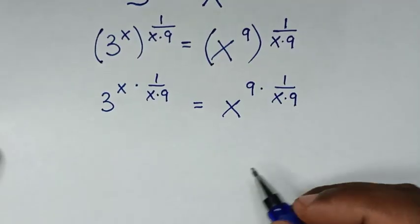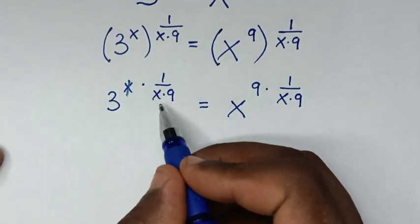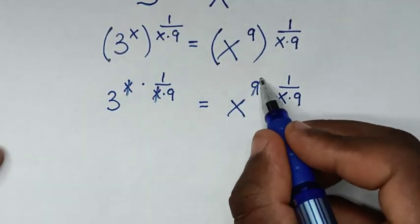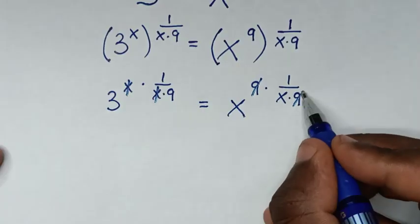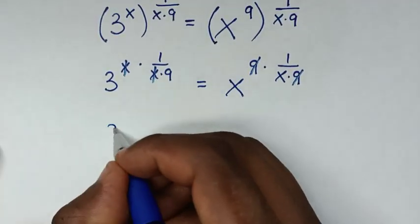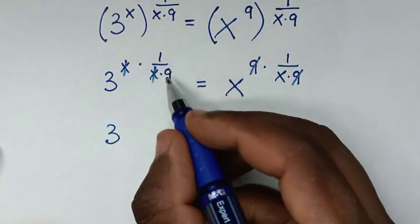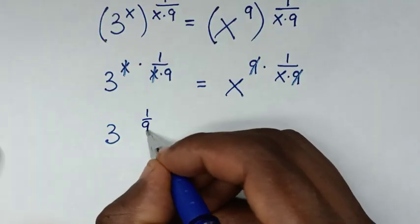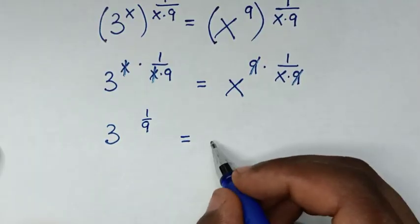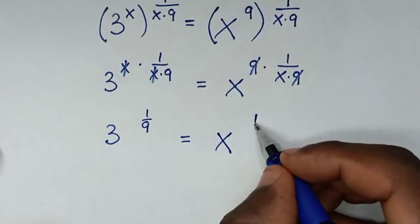In the next step, to simplify: this x and this x cancel, and this 9 and this 9 cancel. So it becomes 3 to the power of 1 over 9, which is equal to x to the power of 1 over x.